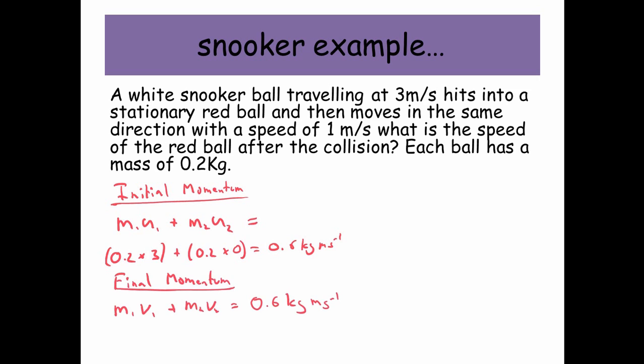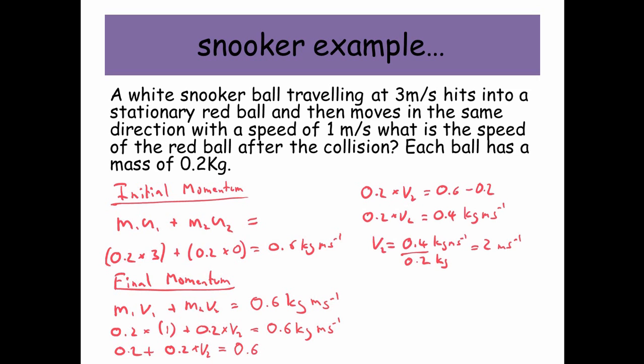Now the final momentum is m1v1 plus m2v2 equals 0.6 kilograms meters per second. The white snooker ball is now traveling at 1 meter per second. So that's 0.2 times by 1 plus the red snooker ball. We don't know what that velocity is, so we're just going to leave it as v2. So we've got 0.2 times v2 equals 0.6 kilograms meters per second. So 0.2 plus 0.2 times v2 equals 0.6. Move that 0.2 over to the other side, so 0.2 times v2 is equal to 0.4. And then dividing by 0.2, I get v2 is equal to 2 meters per second.